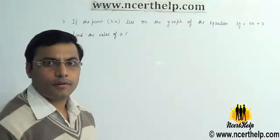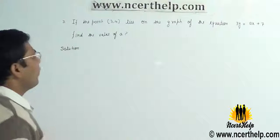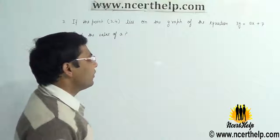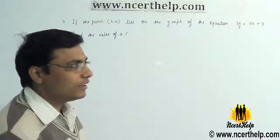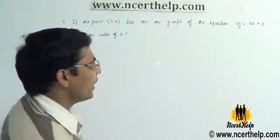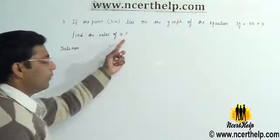Let's consider this problem. In this problem, if the point (3, 4) lies on the graph of the equation 3y = ax + 7, find the value of a.